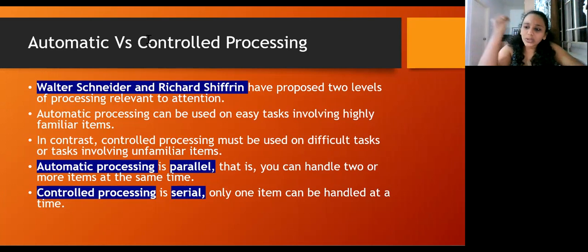Automatic processing can be used on things which are easy, which we have a lot of familiarity with, which we do daily. Like if I ask you to brush, you don't have to put your conscious effort over it - you can brush automatically. Something which is very familiar, you've been doing since childhood, something very routine in your life can be called automatic processing. Automatic processing is parallel - that is, you can handle two or more items at the same time.